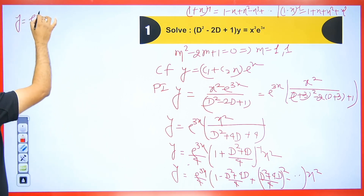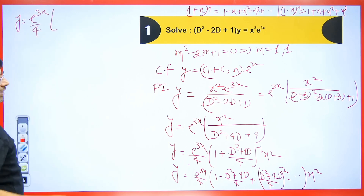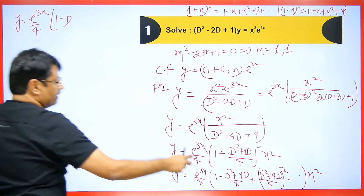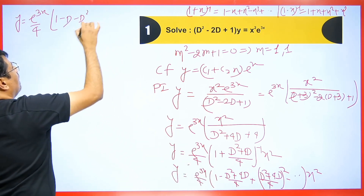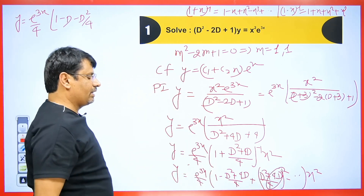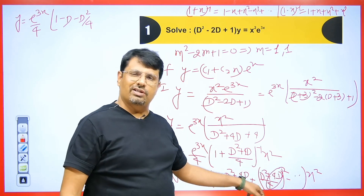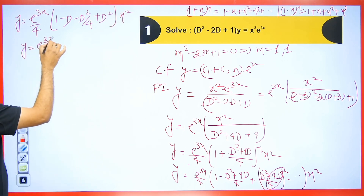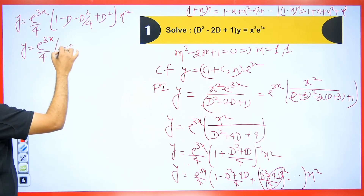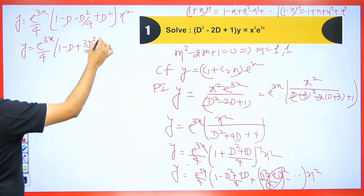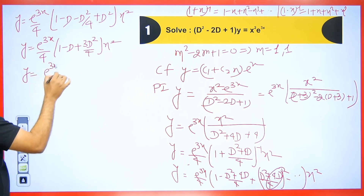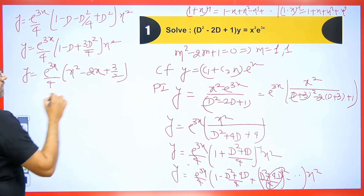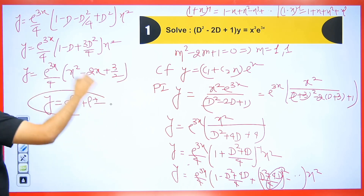So y equals e to the power 3x divided by 4. Taking all terms up to D squared: 1 minus d — cancelling gives minus D — then minus D squared by 4. The squared term gives 16D squared upon 16, so D squared remains, giving plus D squared. Then y equals e to the power 3x upon 4 times 1 minus D minus 3D squared upon 4, times x squared. Multiplying: derivative of x squared is 2x, derivative of that is 2. Cancelling gives 3 by 2. The final answer is CF plus PI.